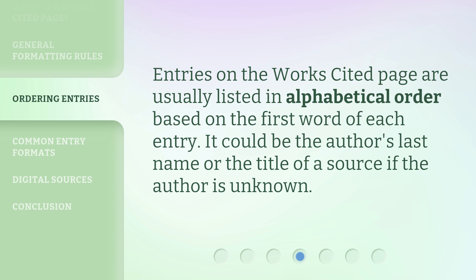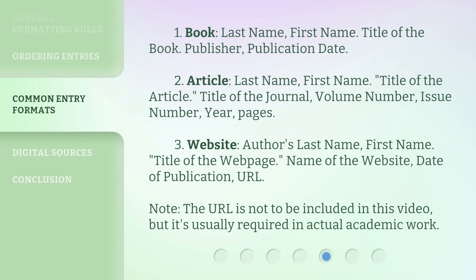1. Book: Last name, First name. Title of the book. Publisher. Publication date. 2. Article: Last name, First name. Title of the article. Title of the journal. Volume number. Issue number. Year. Pages.